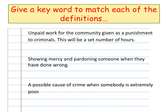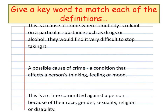Number six: showing mercy and pardoning someone when they have done wrong. Number seven: a possible cause of crime when someone is extremely poor. Number eight: this is a cause of crime when someone is reliant on a particular substance such as drugs or alcohol, and they would find it very difficult to stop taking it. Number nine: a possible cause of crime — a condition that affects a person's thinking, feeling or mood.